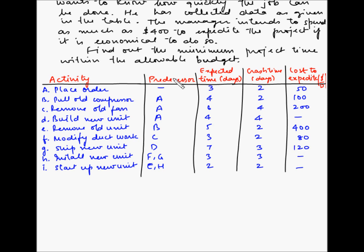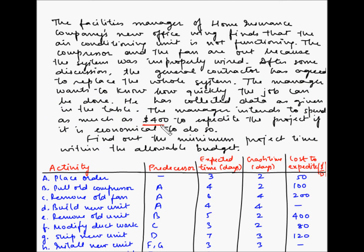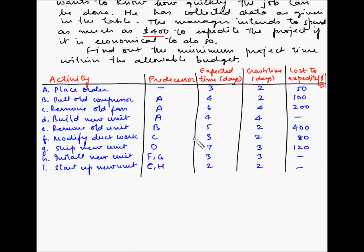Overall, the manager wants to spend a maximum of $400 and get the maximum reduction in project time after crashing. We need to find out which activities can be crashed and how much within an expense of $400. To identify the activities that can be crashed, we first have to find the critical path, and to find the critical path we have to draw a network diagram. So let us first draw the network diagram and then find the critical path.